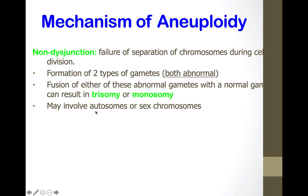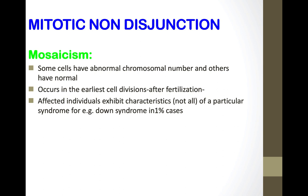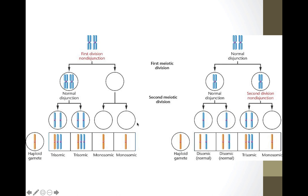Mitotic non-disjunction is the failure of separation of chromosomes during cell division, forming two types of gametes. Mitotic non-disjunction produces mosaicism: some cells have an abnormal chromosomal number and others have normal. It occurs in the earliest cell divisions after fertilization, and affected individuals exhibit only some characteristics of a particular syndrome.